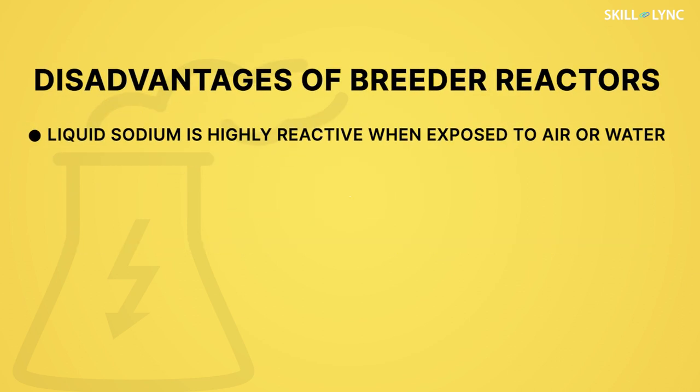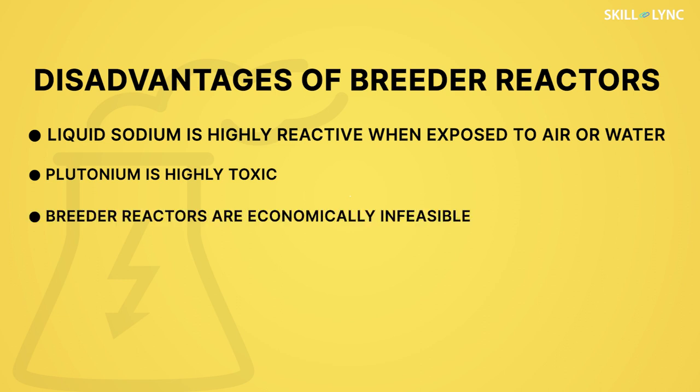Apart from the advantages, breeder reactors have some disadvantages as well. The use of liquid sodium as coolant can cause problems, as on exposure to air or water it reacts violently. Also, the plutonium produced is highly toxic even in small amounts. In addition to that, the construction and operation of breeder reactors is very expensive and economically infeasible.